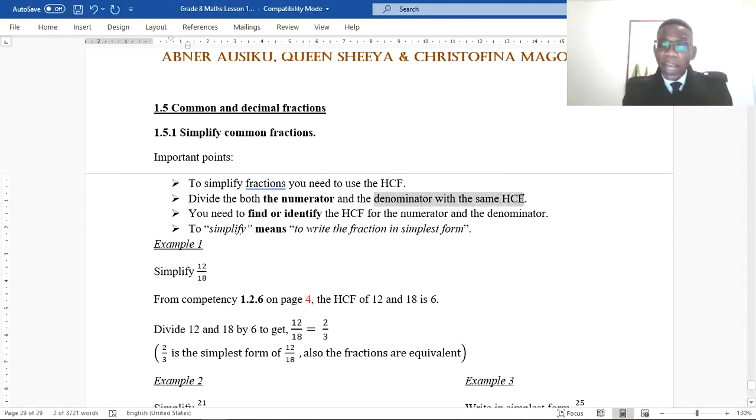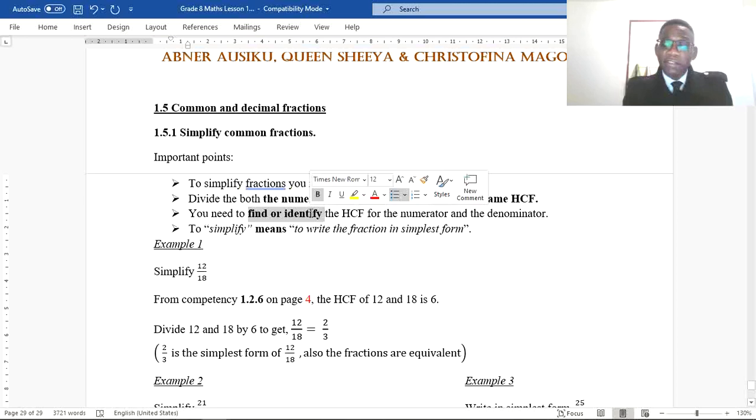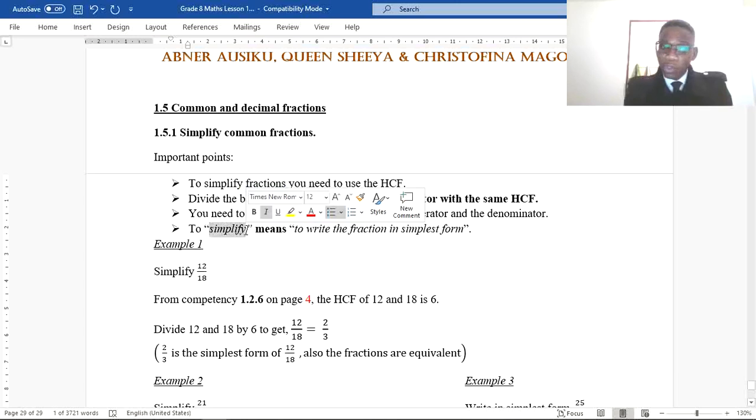What you need to do is divide both the numerator and the denominator by the same highest common factor. It is very important that you identify or find the highest common factor of the two numbers in the fraction. In the test you'll be told to simplify.